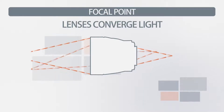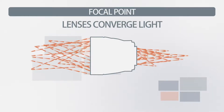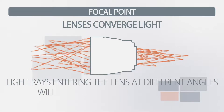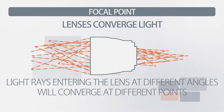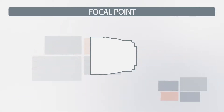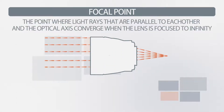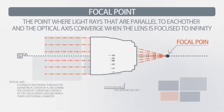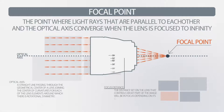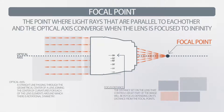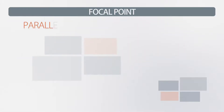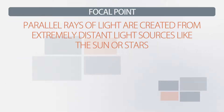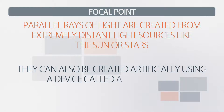The thing is, light is coming into the lens at a variety of angles — infinite angles, in fact. All of this different light converges at different points, but only one of these points is the focal point. The focal point is where rays of light that are parallel to each other, as well as to the optical axis, converge when the lens is set to infinity. Parallel rays of light only happen when the light source is extremely far away, which is why the lens must be set to infinity. This type of light is created from things like the sun or stars, and can also be created artificially from something called a collimator.